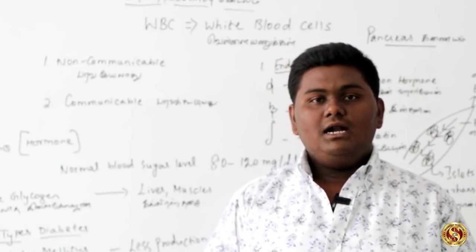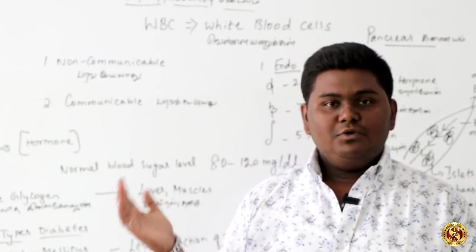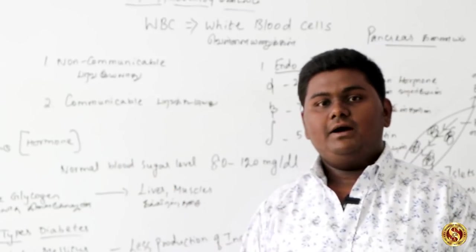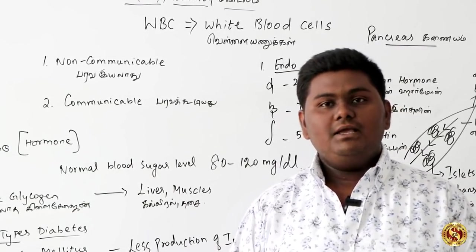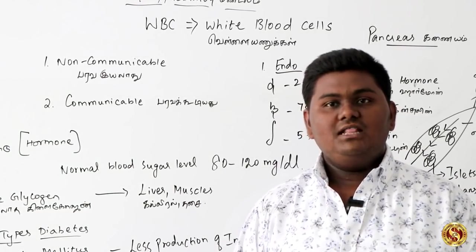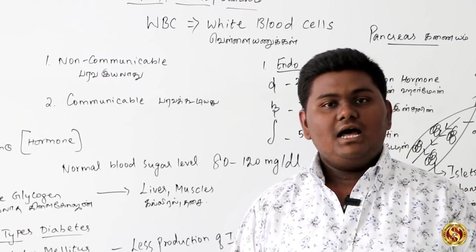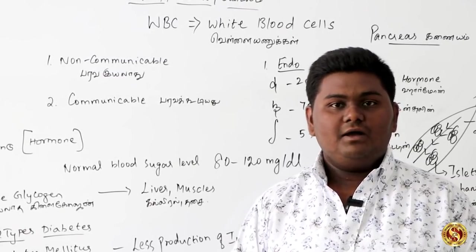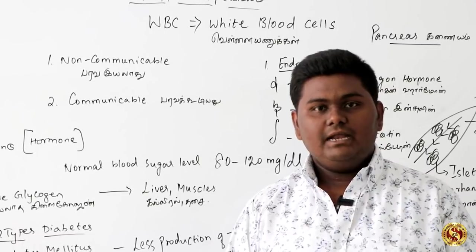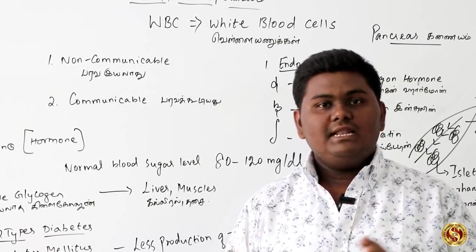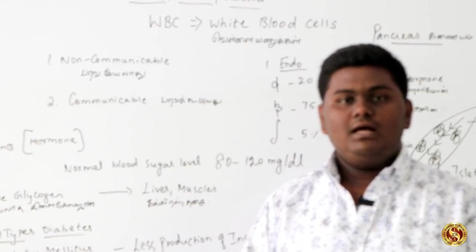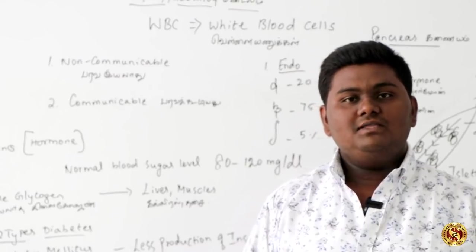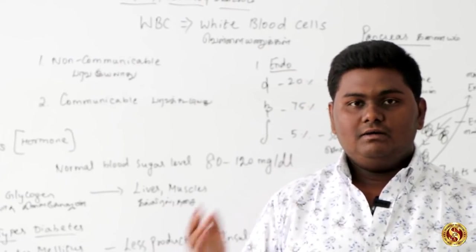Two is the immune system — Noi tada kapa mandalam. Next, three is chemical reactions. Next, four is fertilizers and the reproductive system. If you cover these lessons, we will cover them for TNPSC groups one to four.